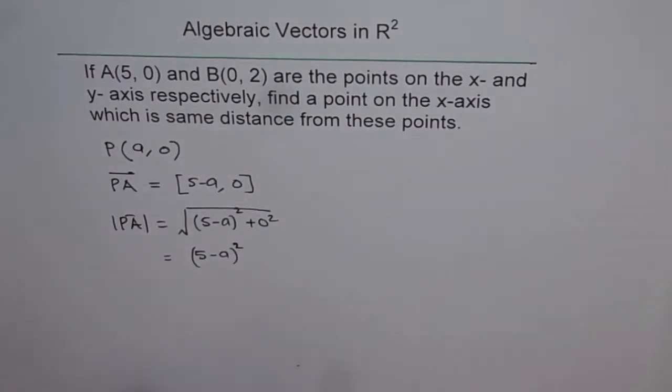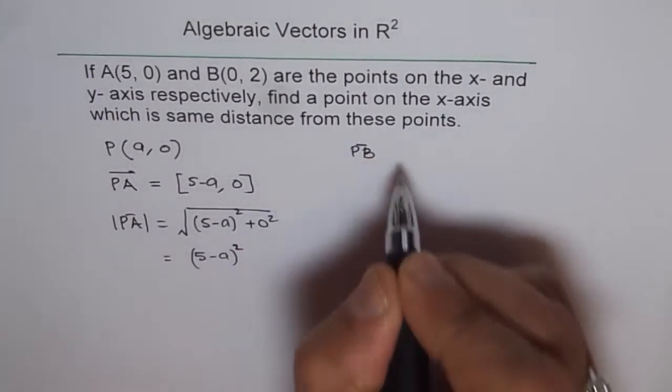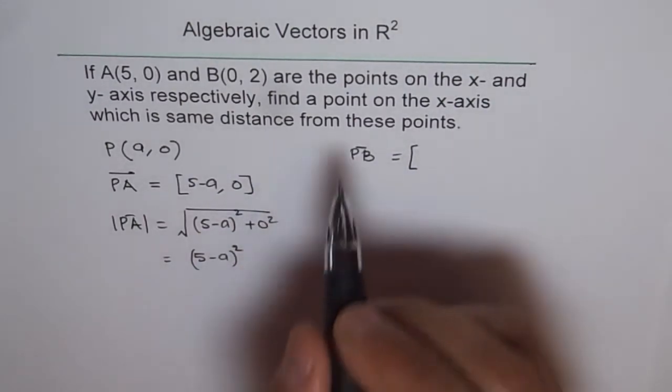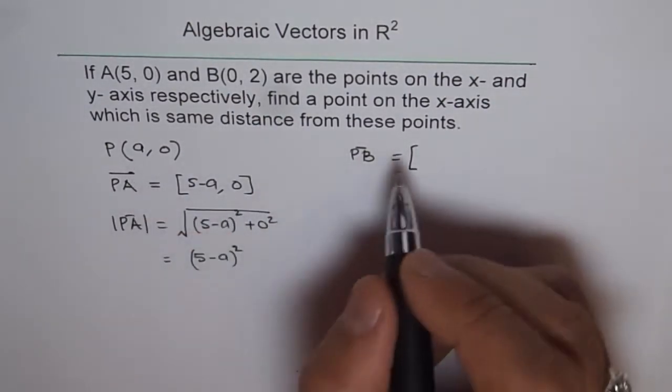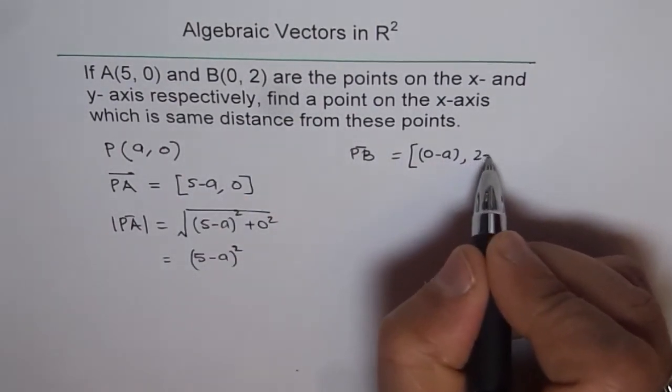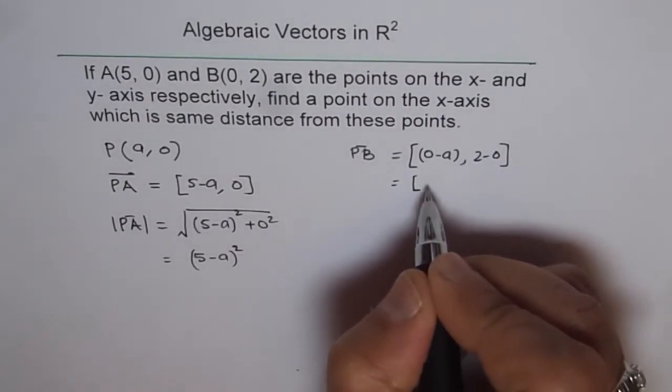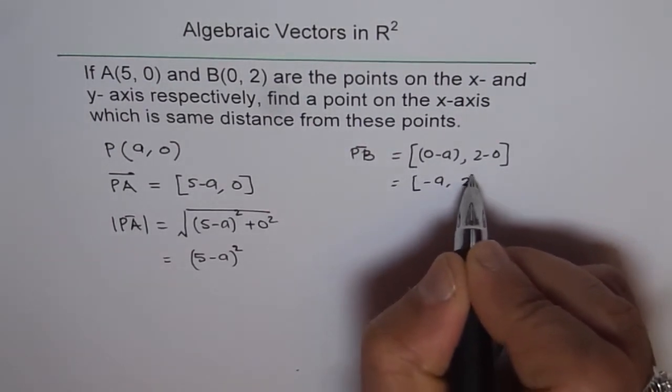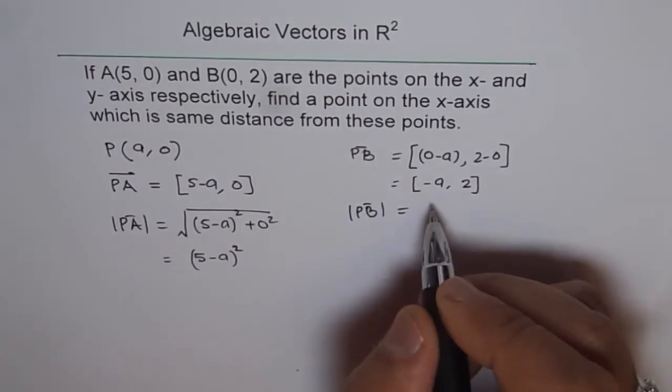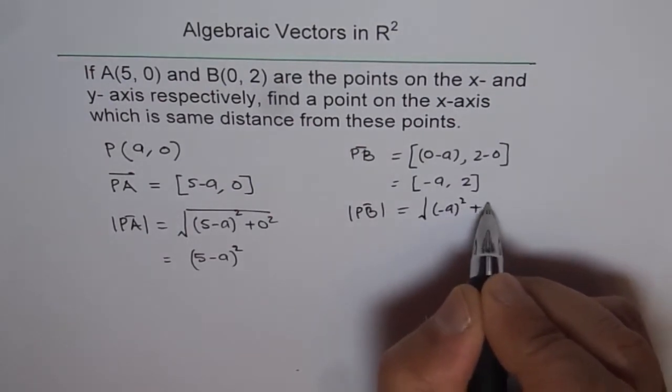Now similarly we can find what is PB equals to. So PB will equal to the vector [0-A, 2-0], that is [-A, 2]. Magnitude of vector PB will be equal to square root of (-A)² plus 2².